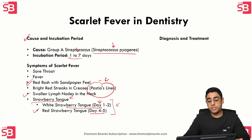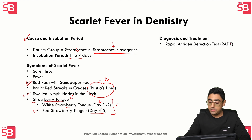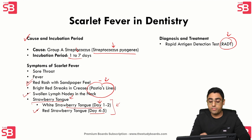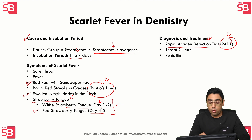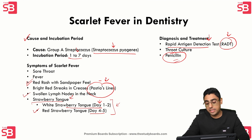For diagnosis, we perform the rapid antigen detection test, which detects antigens specific to group A beta-hemolytic streptococci. A throat culture is also done to confirm the diagnosis. Treatment is through oral penicillin, which effectively eradicates the bacteria and prevents complications from scarlet fever.